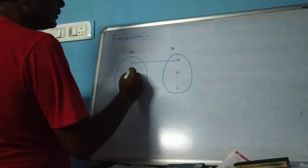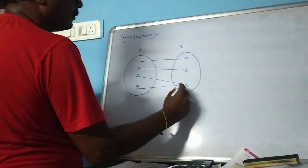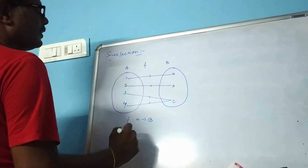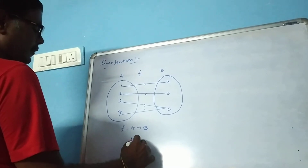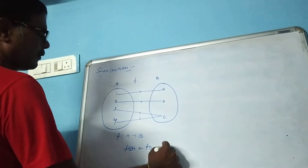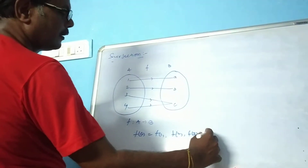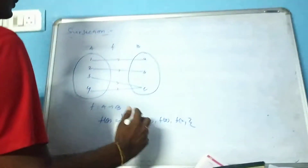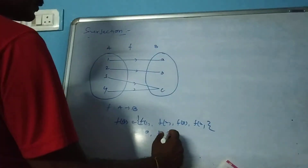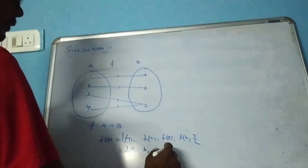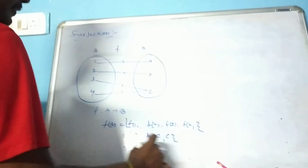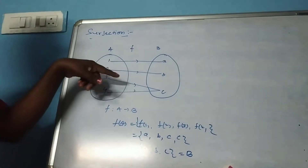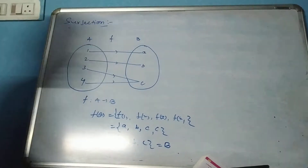I will map it like this. Here, F is a mapping from A to B. F of A is equal to {f1, f2, f3, f4}. What is f1? A. What is f2? B. What is f3? C. What is f4? C. So the range is {A, B, C}, which is equal to B. This is equal to B. Hence, this function is called a surjection.